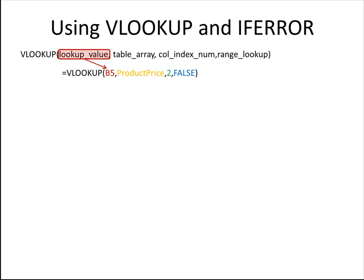The lookup value in our case is B5. The table that we're looking at is called product price. The column index number is 2, which means the second column. And the range lookup is false,